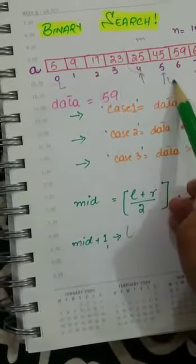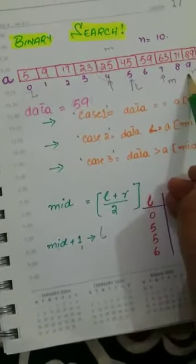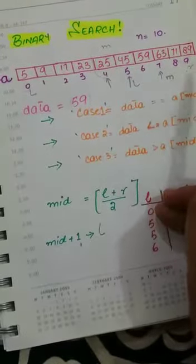Now this is our left, this is our mid, and this is our right. We have left, mid, and right.